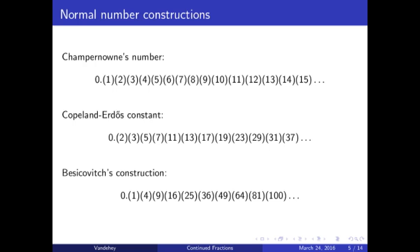Since the problem of determining the normality of a given constant, such as pi, is so hard, we instead try to understand the concept of normality itself better by providing explicit examples of normal numbers. This has grown into a popular area of mathematics, attracting such luminaries as Turing and Erdős.